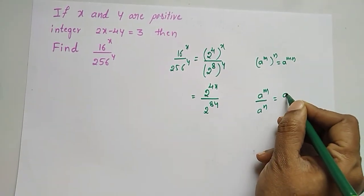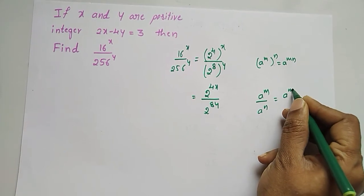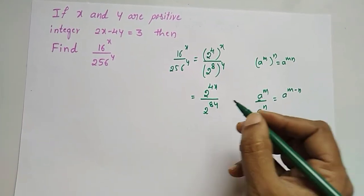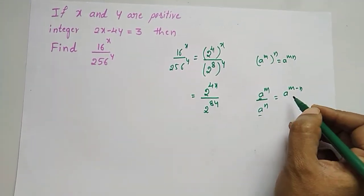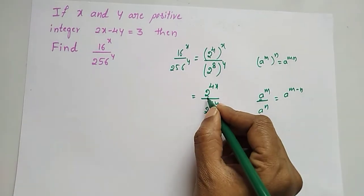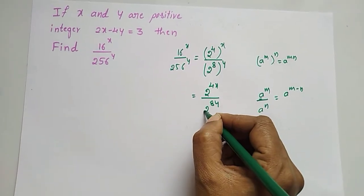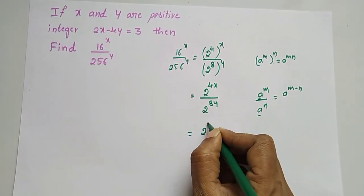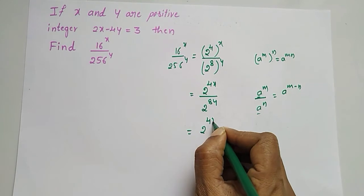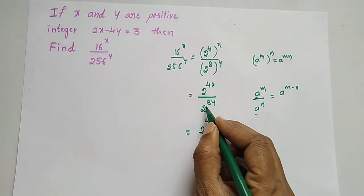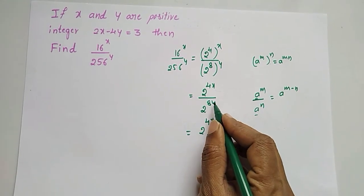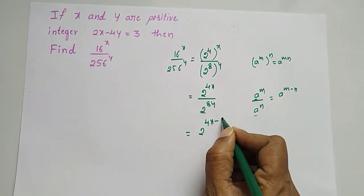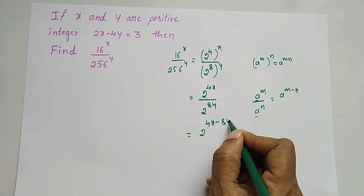Now apply the formula: a to the power m divided by a to the power n is equal to a to the power m minus n. Applying this, we get 2 to the power 4x minus 8y.